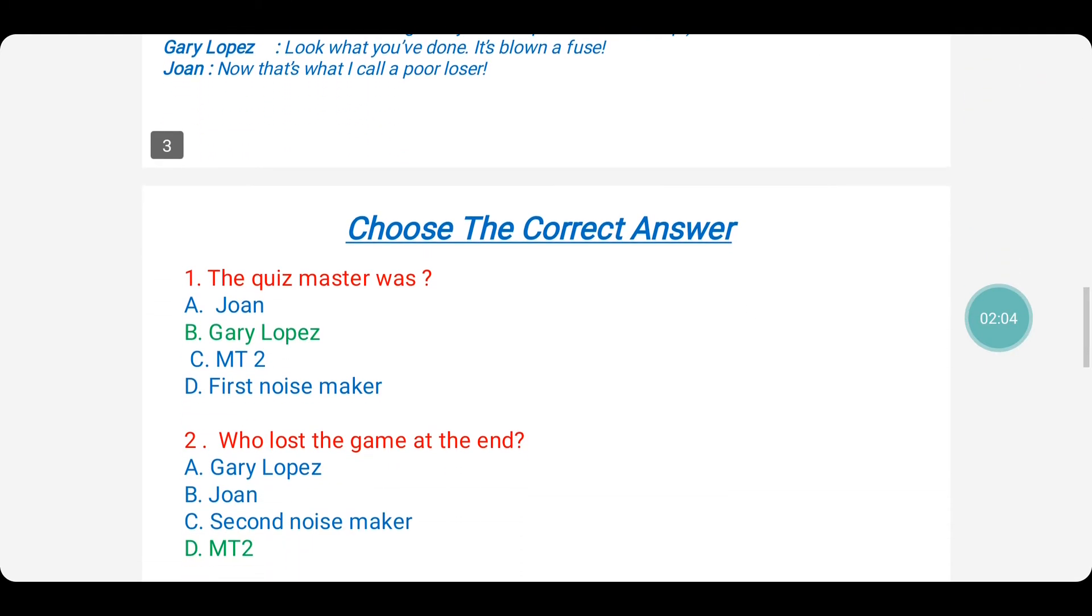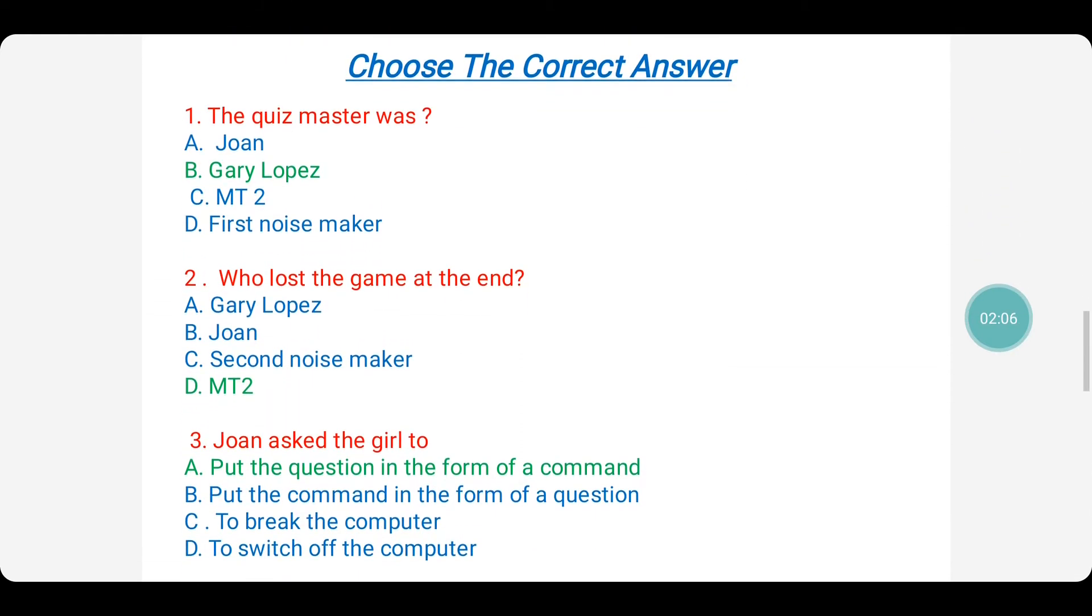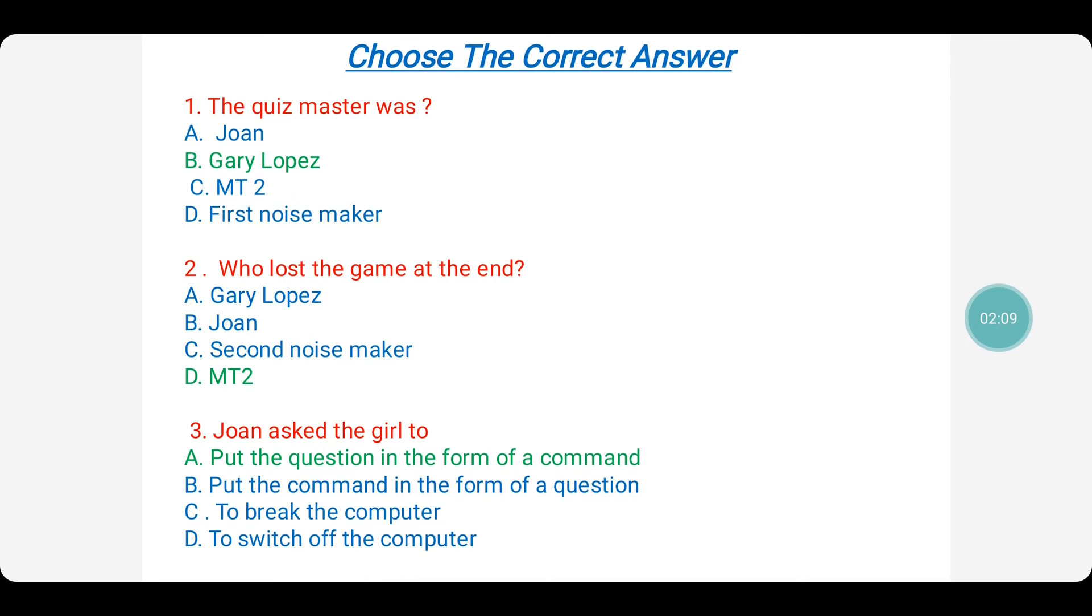That is how what we see in the lesson. So what we learn actually is man is always superior to the machine. On to the comprehension: choose the correct answer.